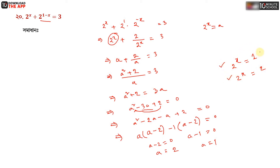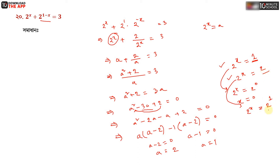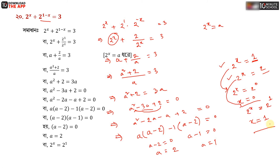From here we find our x values. For 2 to the power x equal to 1, we can write 2 to the power x equal to 2 to the power 0, so x equal to 0. And for 2 to the power x equal to 2 to the power 1, we get x equal to 1. So x has two solutions: x equal to 0 and x equal to 1.